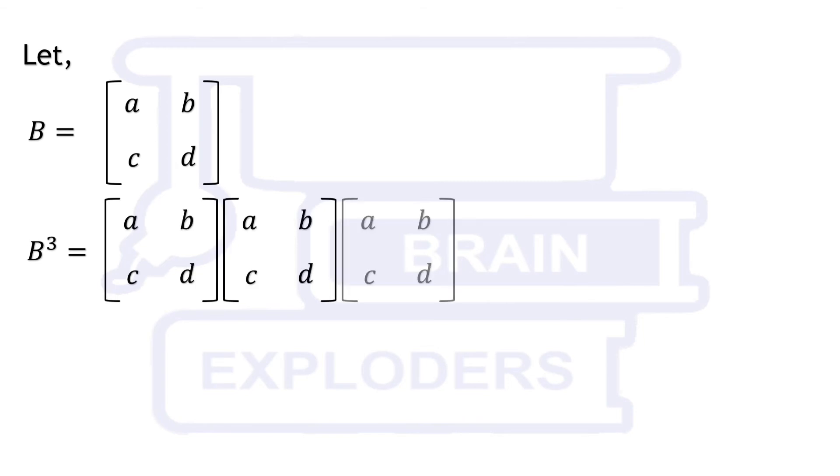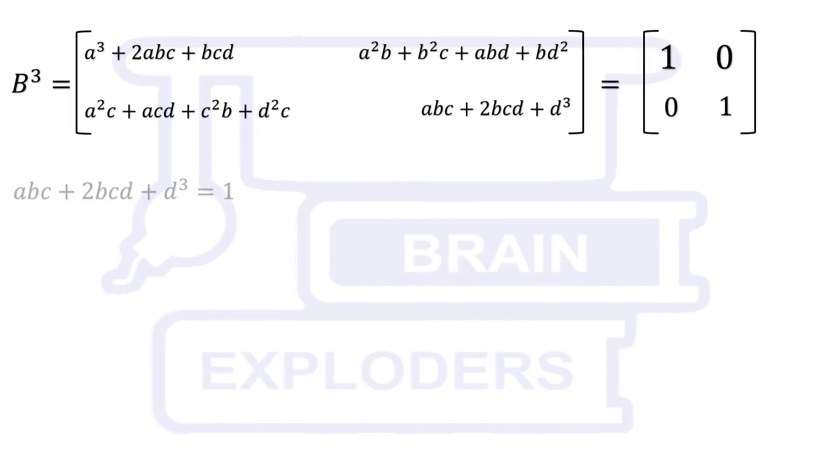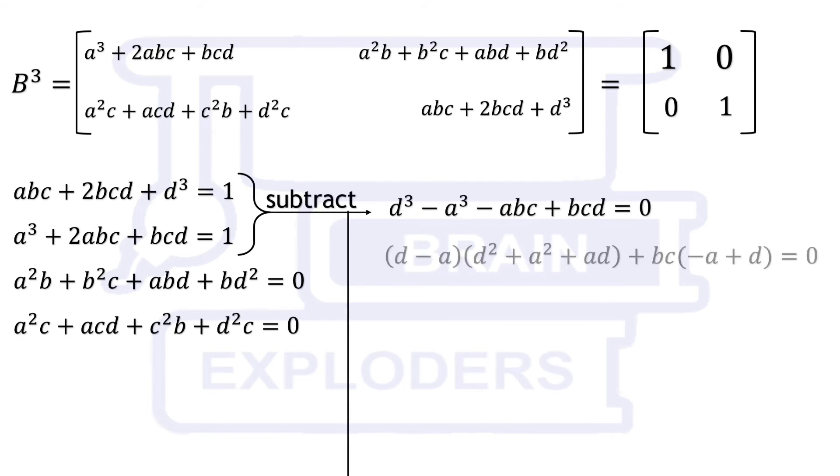Put it equals to identity matrix. Compare both of the sides. We get 4 equations. Subtract these first 2 equations. This gives us (D minus A) times (D² plus A² plus AD plus BC) equals to 0.